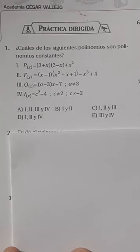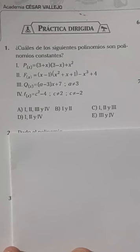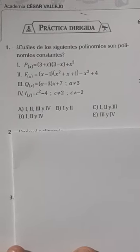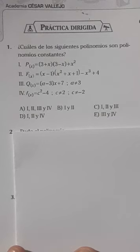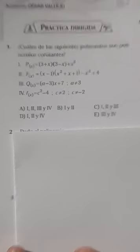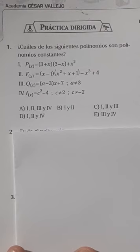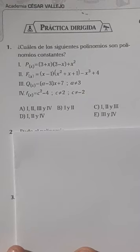Hola, hola, ¿qué tal? Vamos a esperar ahí algunos segunditos que se vayan uniendo. ¿Cómo están, chicos? Vamos a hacer la segunda parte de polinomios 2. La práctica pasada fue de polinomios 1. Ahora vamos a trabajar con polinomios 2, que en este caso vamos a hablar de polinomios especiales. Vamos a darle algunos segundos para que la gente se vaya integrando.